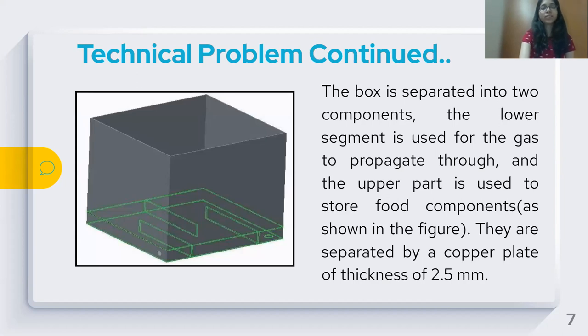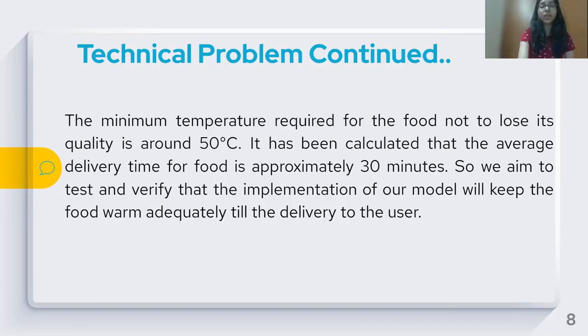The delivery box is separated into two chambers. The lower chamber is used to propagate the gas and consists of six baffles that are used to direct the flow of exhaust gases. The upper chamber is used to store the food components. The lower and upper chambers are separated by a copper metal plate of thickness 2.5 millimeters. The plate is chosen such that maximum heat transfer takes place through it. The minimum temperature required for the food not to lose its quality is 50°C.